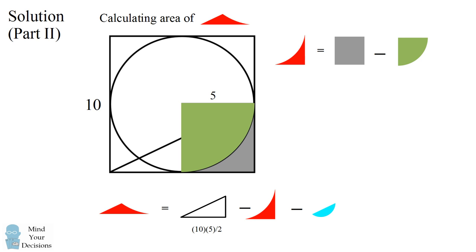This square has a side length of 5, so its area is 25. The circle has a radius of 5, so one quarter of the circle is pi times 5 squared divided by 4. So we solve for this portion as 25 times (1 minus pi over 4).